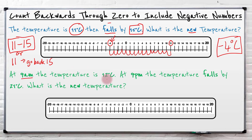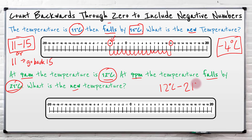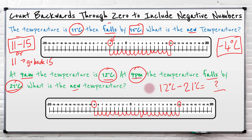Let's do one more. At nine a.m. the temperature is twelve degrees Celsius. At nine p.m. the temperature falls by twenty-one degrees Celsius — what is the new temperature? We're starting at twelve, it falls which means it gets smaller, so we're taking away twenty-one degrees Celsius. Starting at twelve: one, two, three, four, five, six, seven, eight, nine, ten, eleven, twelve, thirteen, fourteen, fifteen, sixteen, seventeen, eighteen, nineteen, twenty, twenty-one. And we've got our temperature — it's minus nine degrees Celsius at nine p.m.